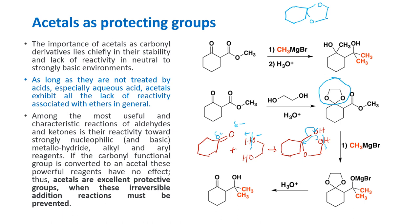This cyclic acetal prevents the reaction of the carbonyl group with methyl magnesium bromide or Grignard reagent, and specifically allows the reaction of the ester to form the tertiary keto alcohol. This is a very important method of converting carbonyl groups into an acetal so that they are prevented from reacting. These acetals are called protecting groups or masking groups in chemistry, and they are very important compounds when looking at organic synthesis.